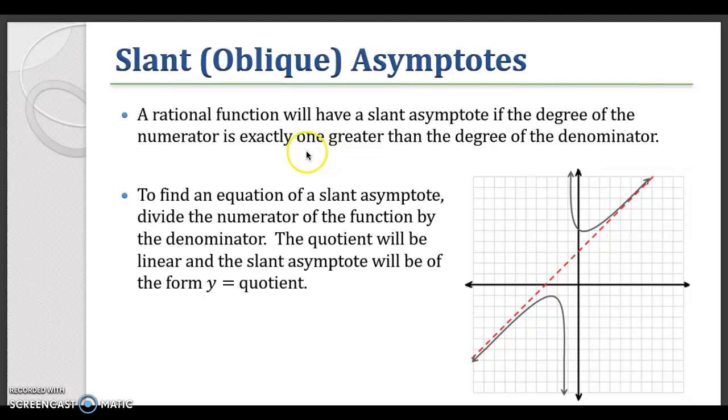Remember that fraction bar can also be talked, like we can say that's division, right? So to find an equation of the slant asymptote, we divide the numerator of the function by the denominator. So we actually do the long division and then the quotient, so the answer minus our remainder will be linear and the slant asymptote will be of the form y equals the quotient.